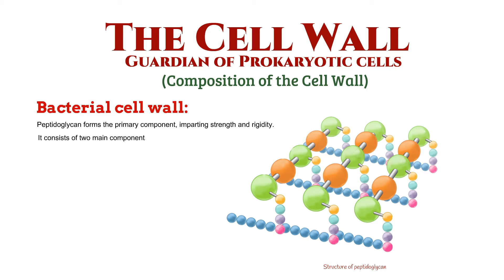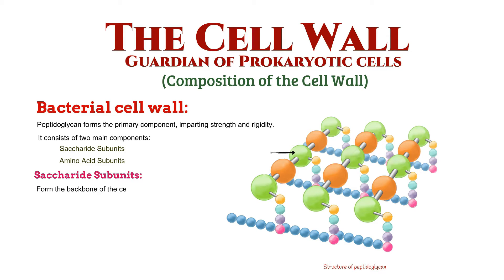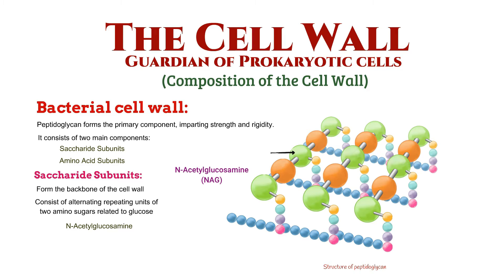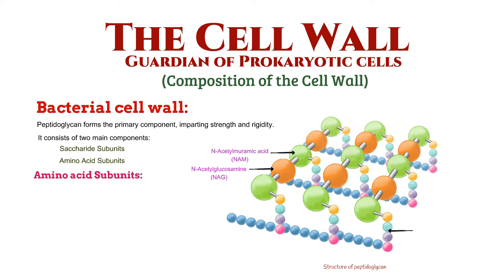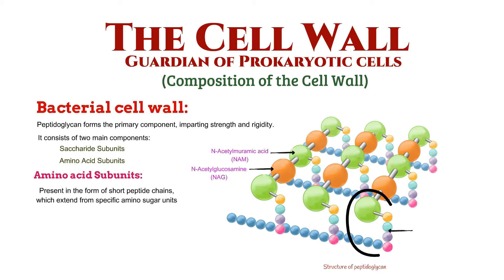Peptidoglycan consists of two main components: saccharide subunits and amino acid subunits. Saccharide subunits form the backbone of the cell wall and consist of alternating repeating units of two amino sugars related to glucose — N-acetylglucosamine and N-acetylmuramic acid. Amino acid subunits are present in the form of short peptide chains, which extend from specific amino sugar units.